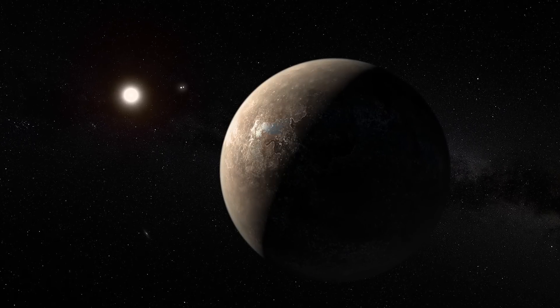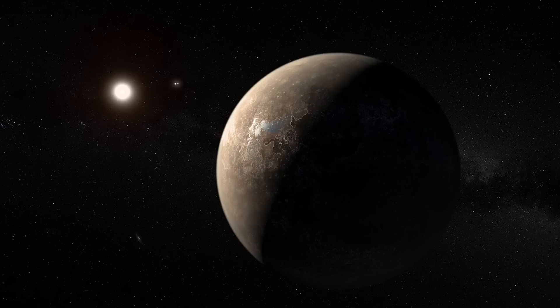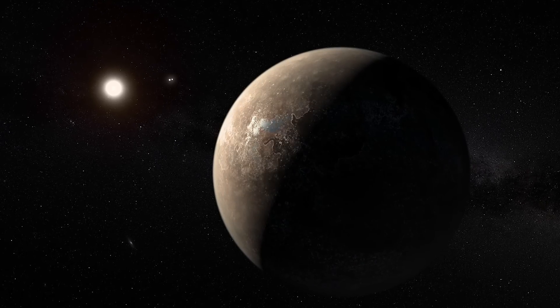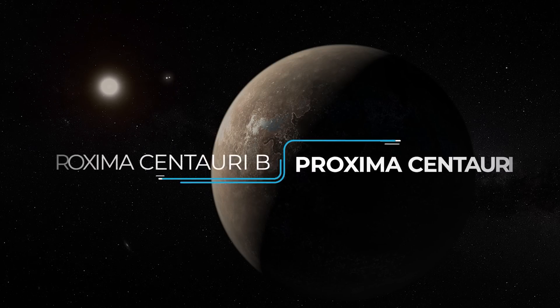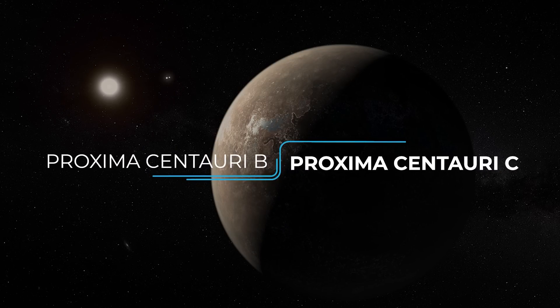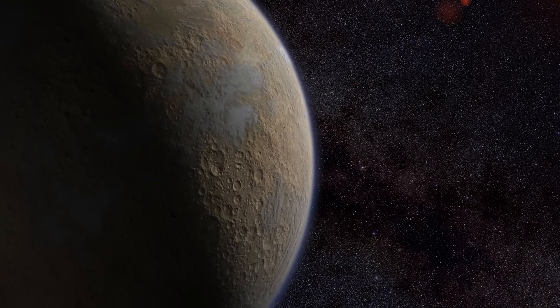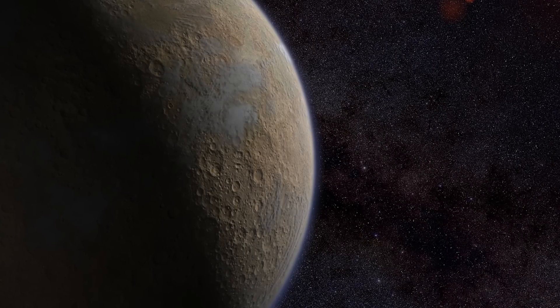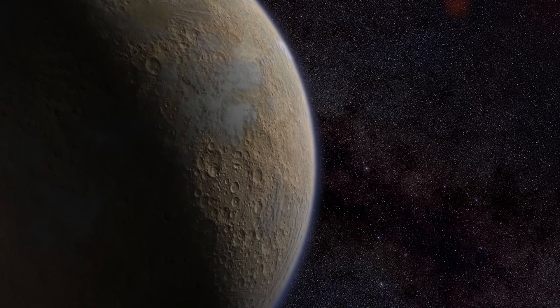We know also that Proxima Centauri is a small, low-mass star located at 4.2465 light-years away from the Sun, and it has two confirmed exoplanets, Proxima Centauri b and Proxima Centauri c. Proxima Centauri b orbits the star at a distance of roughly 0.05 AU, about 7.5 million kilometers, with an orbital period of approximately 11.2 Earth days.